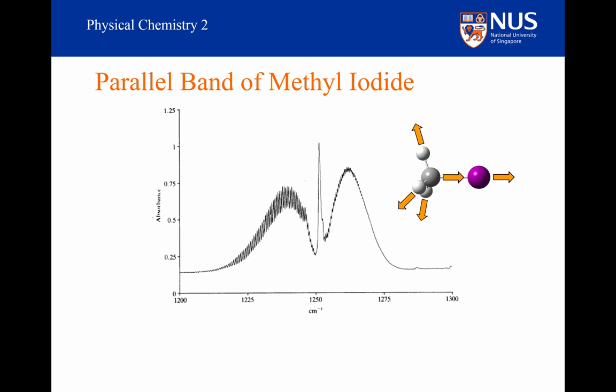So for methyl iodide, this is what the parallel band looks like. It is a very heavy molecule, so the rotational constant will be very small, and so the rotational structure will be very close together. So we get overlapping lines, but we are still able to resolve the fine structure. It is not, however, as resolved as the CO2 spectrum we had. But this is still a classic PQR band profile.